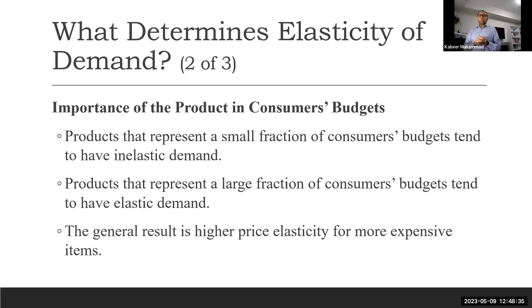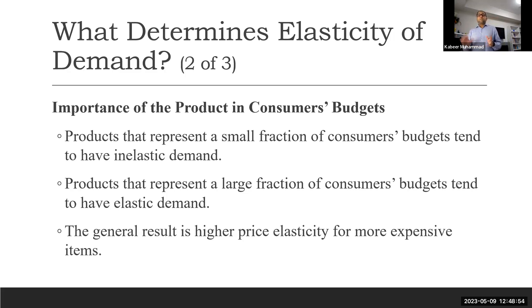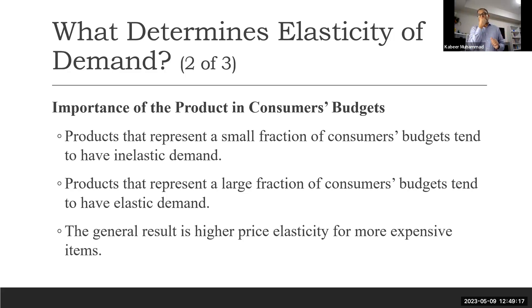Products that represent a small fraction of the consumer's budget tend to have inelastic demand — like chewing gum or small daily items. If the price changes, we are not going to change the quantity. But if the product is a bigger budget item in our monthly or annual budget, demand is elastic. So the general result is higher price elasticity for more expensive items — luxury or high-price items are more elastic compared to low-price items.